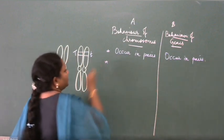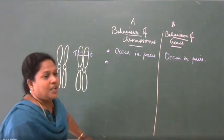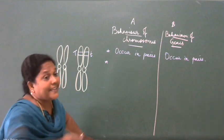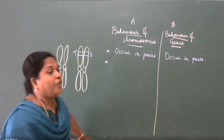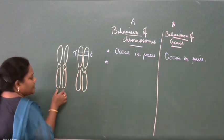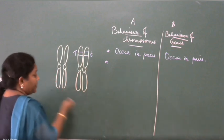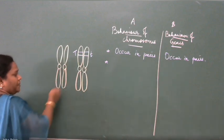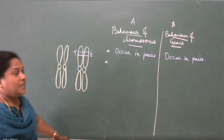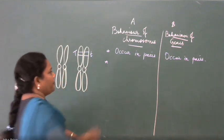Next point: they will segregate at the time of gamete formation. So chromosomes segregate at the time of gamete formation — when gametes are formed, one pair will move on to one gamete, the other pair will move on to the other gamete. That's how they separate into 23 and 23. So chromosomes segregate at the time of gamete formation.